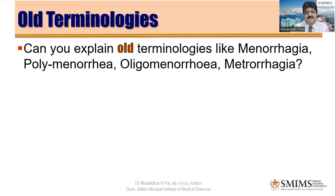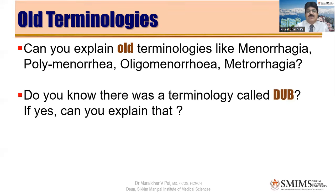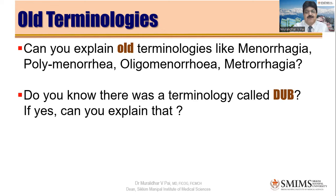Metrorrhagia refers to intermenstual bleeding — irregular bleeding — and of course there could also be a pain component in those patients. Now, having recapitulated the old terminology, we should also say a word about DUB, because this used to be a favorite topic. It was beautifully described in Dewhurst. Unfortunately, the terminology DUB is now obsolete. DUB was essentially when there was no organic disease in the genital tract yet abnormal bleeding was present.